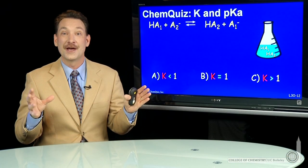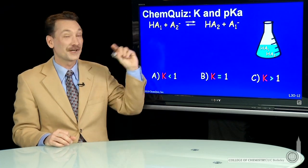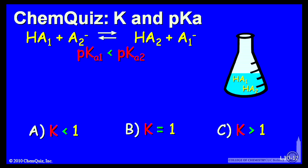We're looking at two weak acids reacting together, HA, the weak acid reacting with the conjugate base of HA2. Now, in this case, we were told pKa1 was less than pKa2.